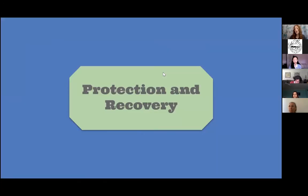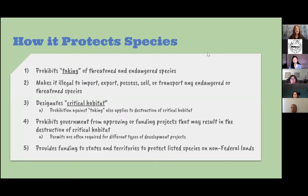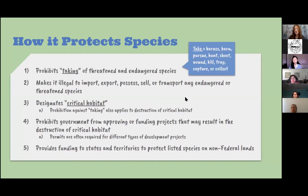The Endangered Species Act protects and recovers species on its list in several ways. One is by prohibiting the taking of threatened and endangered species. The definition of taking in the ESA includes any harassing, harming, pursuing, hunting, shooting, wounding, killing, trapping, capturing, or collecting — all of those fall under the taking term.